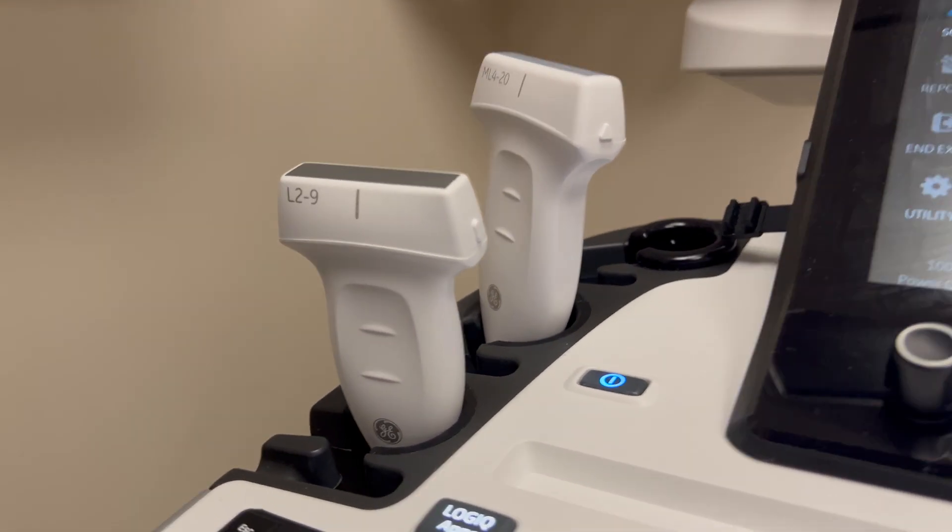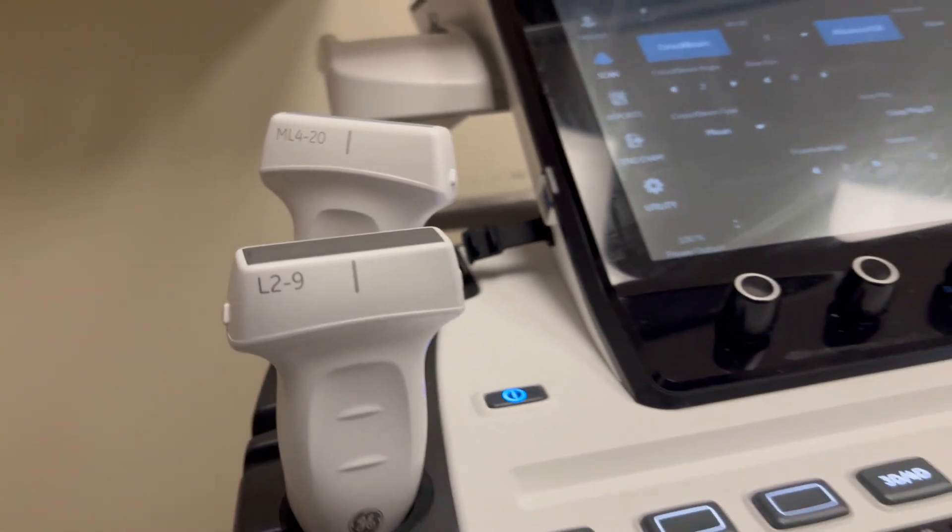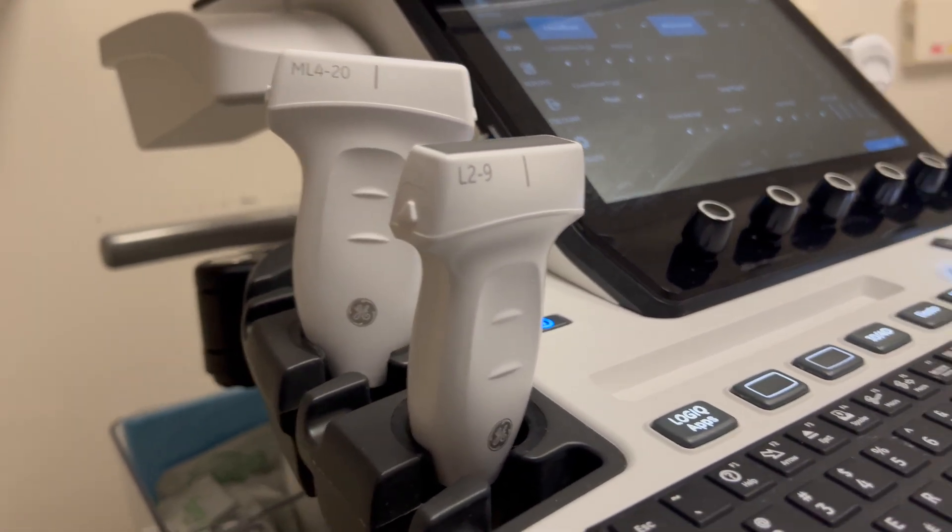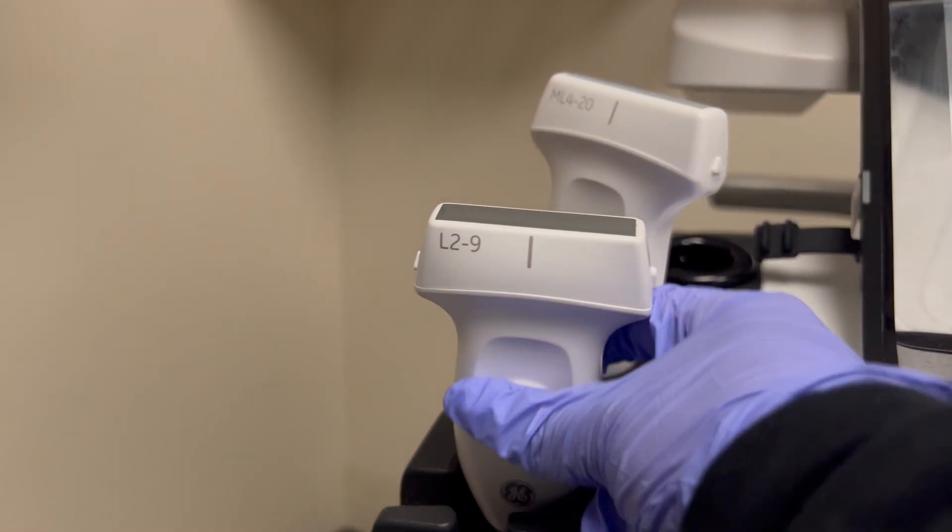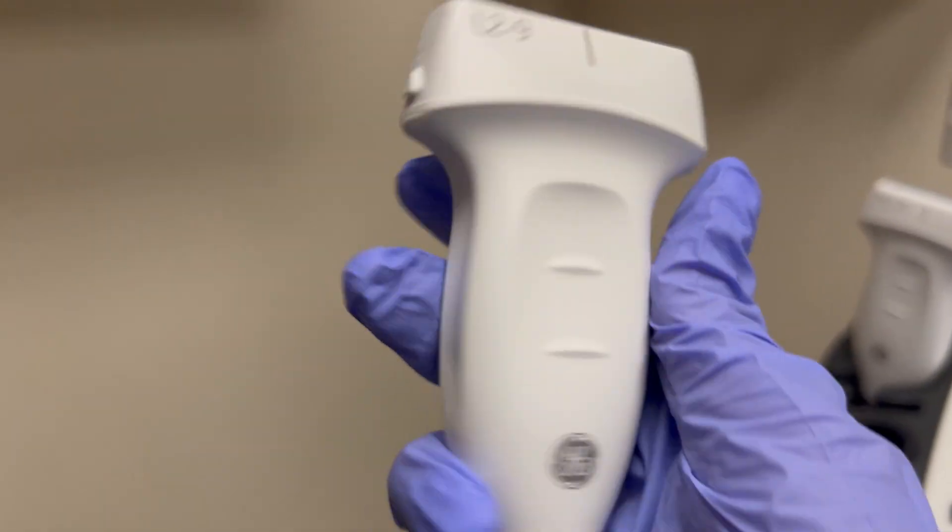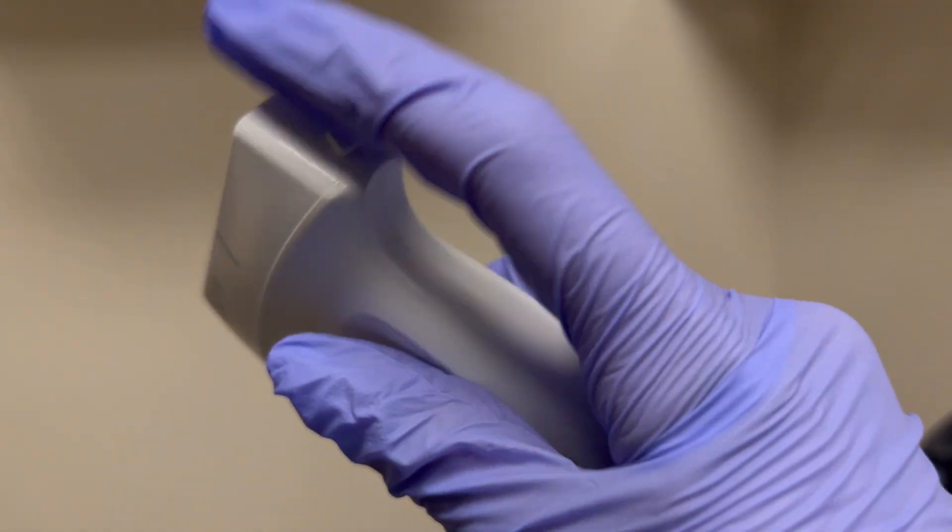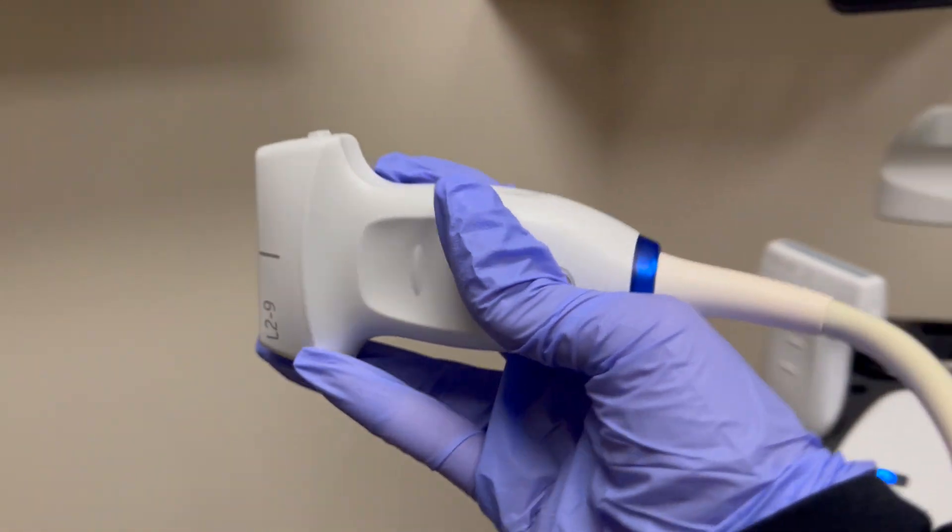The next probes we are going to talk about are the linear probes. These are the ones we're going to be using for mostly superficial structures and for arteries and veins. These are most likely your vascular probes, but like I said earlier you can also use the curve probes on vascular as well.